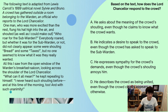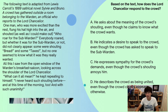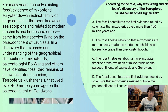Answer D: He describes the crowd as being united, even though the crowd clearly appears otherwise. He definitely does describe the crowd as being united — he says 'with such unanimity.' And right up here we can see that they didn't really seem to know what they were shouting about: 'bread,' 'taxes,' no one really knew. But he does describe the crowd as united, and that makes D the correct answer.